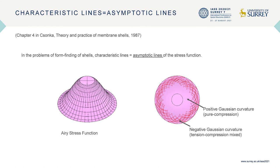There is a textbook that pioneers this problem, and the book says that the characteristic lines in our problem are the asymptotic lines of Airy's stress function. And that is correct. The asymptotic lines exist only in the tension compression mix zones, and they typically run across the domain diagonally at roughly 45 degrees.